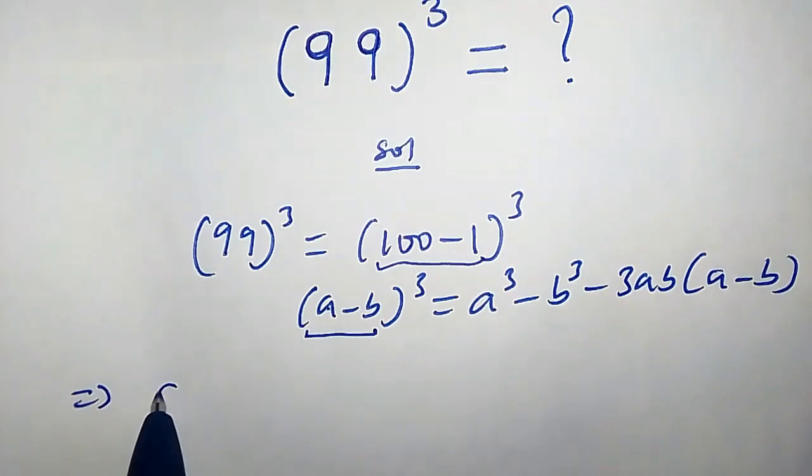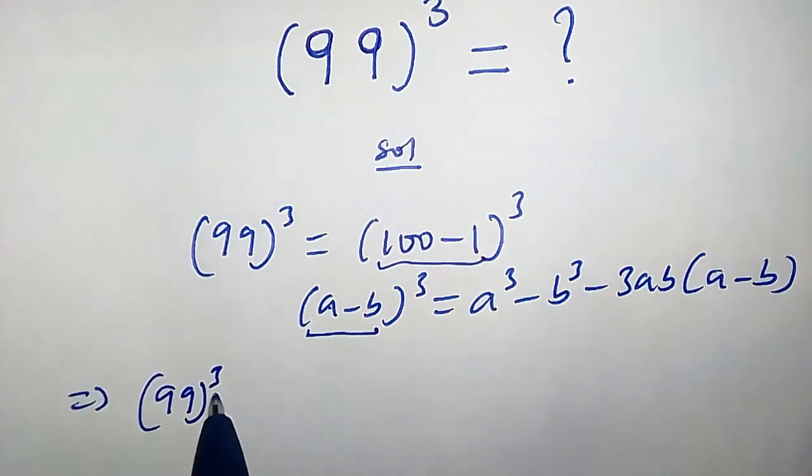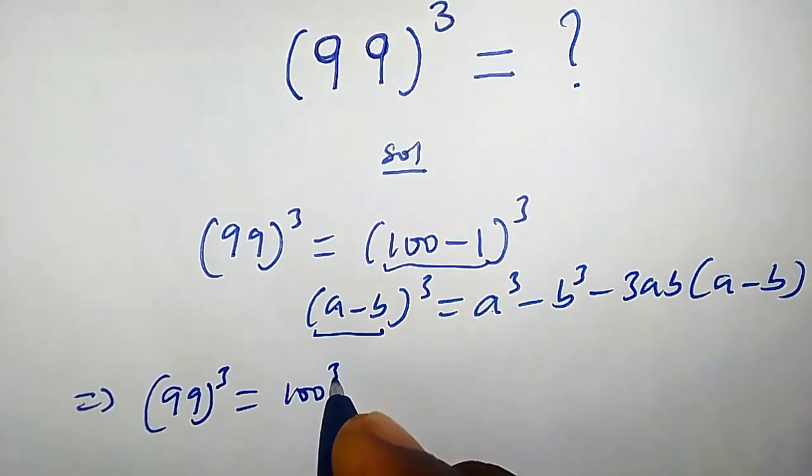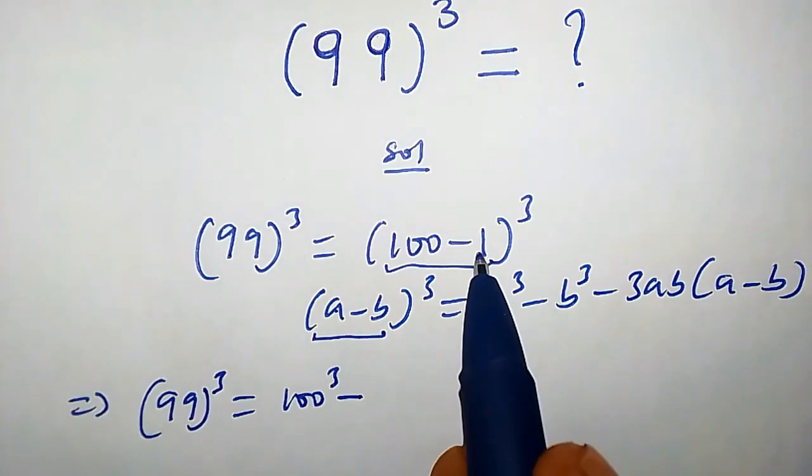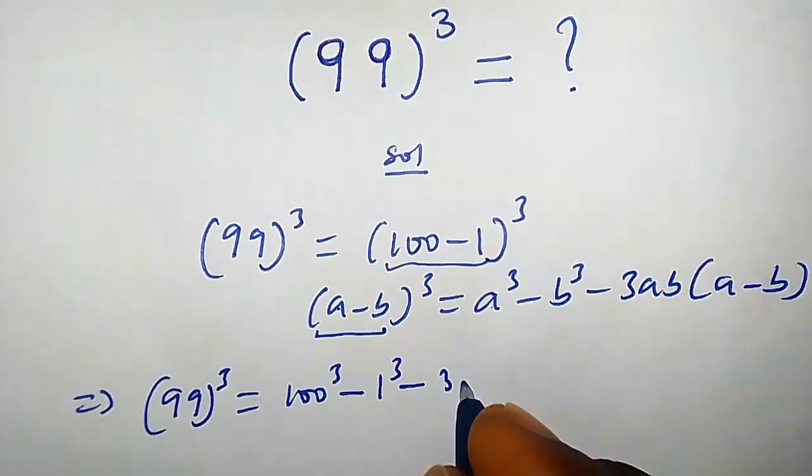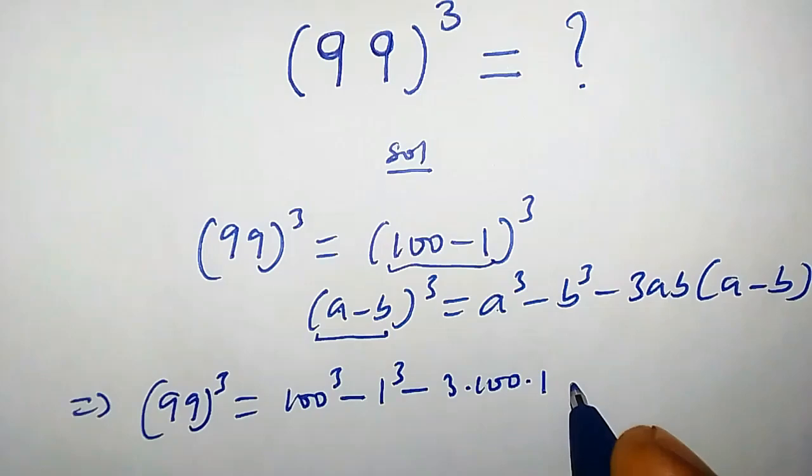This implies 99³ equals—we just plug 100 here—so we're going to have 100 raised to the power of 3, minus 1 raised to the power of 3, minus 3 × 100 × 1 × (100 - 1).